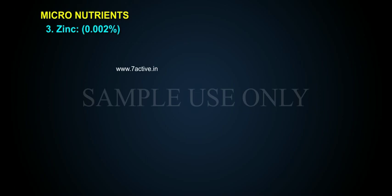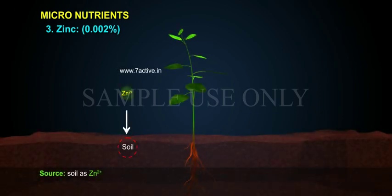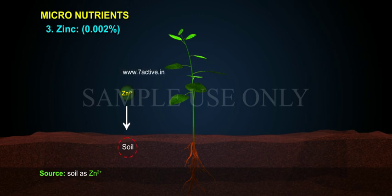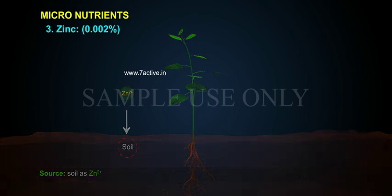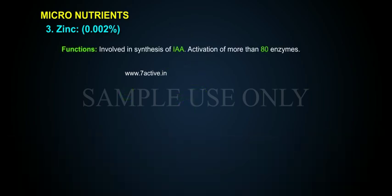Zinc makes up 0.002% and is absorbed from soil as Zn2+. Functions of zinc: it is involved in the synthesis of IAA, and it is an activator of more than 80 enzymes.